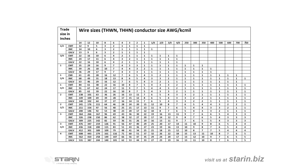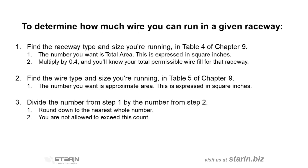To determine how much wire you can run in any given raceway, you first find the raceway type and the size in NEC Chapter 9, Table 4. The number you want is the total area, expressed in square inches.